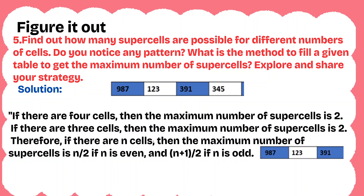Question 5: Find out how many supercells are possible for different numbers of cells. Do you notice any pattern? If there are 4 cells, the maximum number of supercells is 2. If there are 3 cells, the maximum number is also 2. The pattern is: if n is even, the maximum number of supercells is n divided by 2. If n is odd, it is n plus 1 divided by 2. For example, with 4 cells (even), maximum supercells = 4/2 = 2. With 3 cells (odd), maximum supercells = (3+1)/2 = 2.